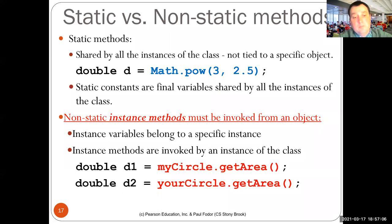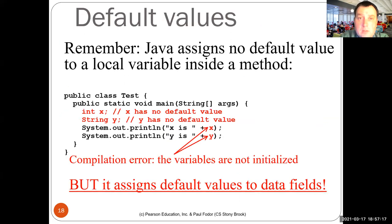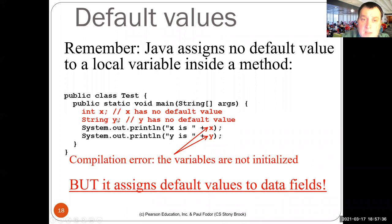Any questions up to now? For some reason, the chat is disappearing when I start presenting, so I don't know if you're asking questions. Java does not assign default values to local variables defined inside methods — if you have a main method with `int x` and `String y` and try to print them, you'll get a compilation error telling you the variables are not initialized.